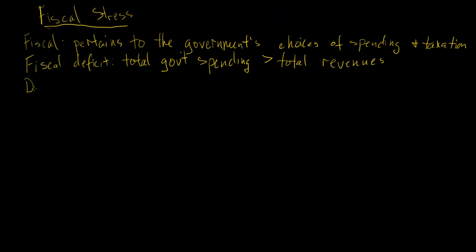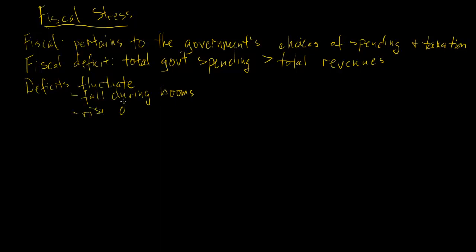Now, one thing about deficits that's important to remember is that deficits fluctuate. They tend to fall during economic booms and they tend to rise during recessions. So it's perfectly normal for deficits to rise and fall over the business cycle. They rise during recessions because income has fallen and therefore tax revenues have fallen, and also certain kinds of government spending have increased naturally — things like unemployment compensation. And of course the opposite occurs during booms.